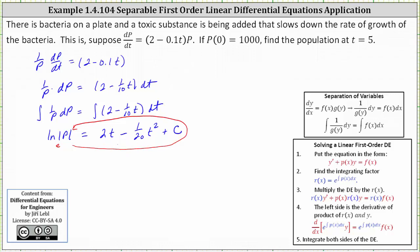So this gives us p equals e^(2t - 1/20 t² + C). From here we can write e^(2t - 1/20 t² + C) as e^(2t - 1/20 t²) times e^C. Remember, when we're multiplying with the base the same, we add the exponents.